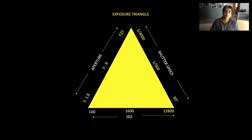To capture the right exposure we have three tools: aperture, shutter, and ISO. Using a combination of these three tools, or any one of the tools, we can achieve different exposure levels. Let us look at how to control exposure using shutter speed.